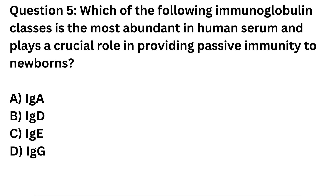Question 5. Which of the following immunoglobulin classes is the most abundant in human serum and plays a crucial role in providing passive immunity to newborns?